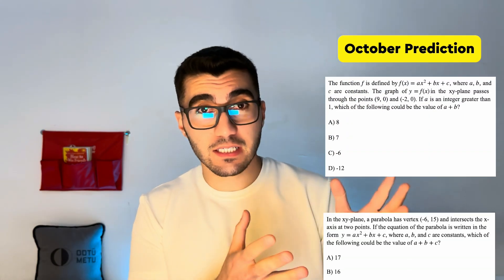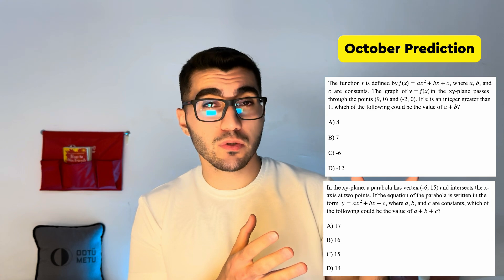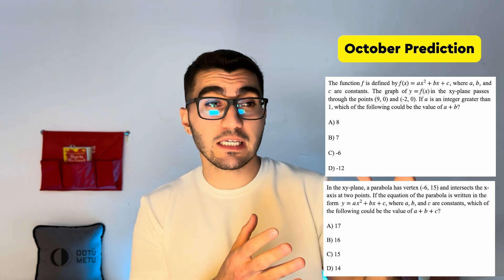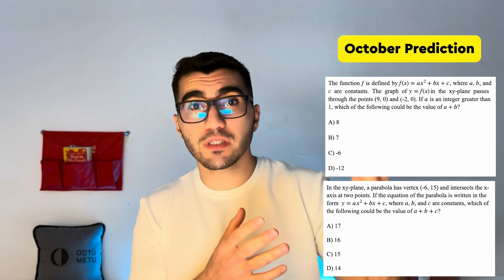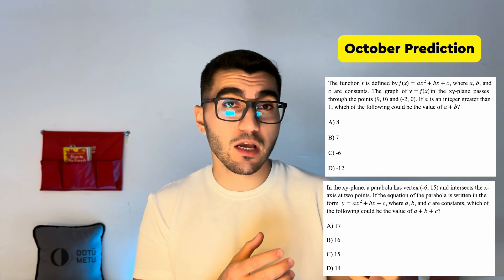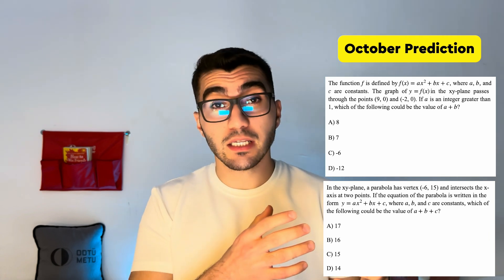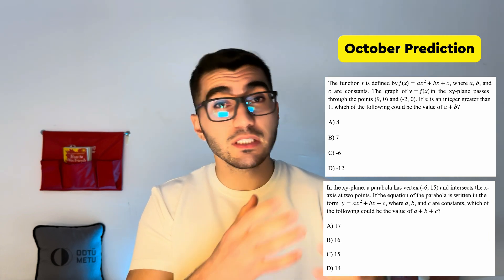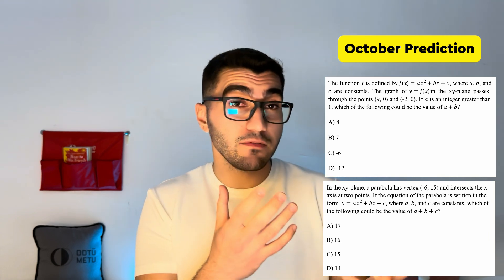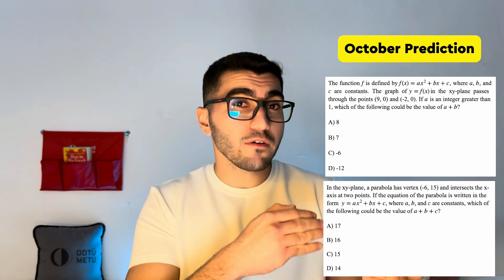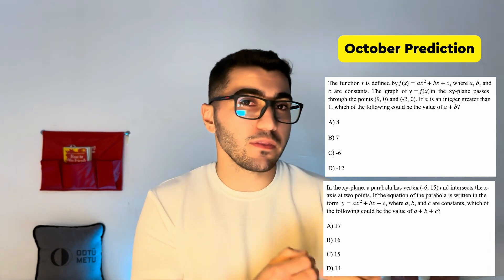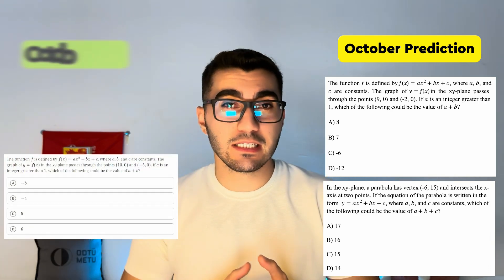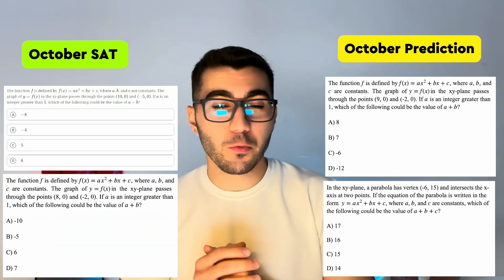The next two predicted questions covered quadratic equation forms. The first type gives you the x-intercepts and requires the x-intercept form of the quadratic equation. The second type gives you the vertex and requires the vertex form. Either one could be on the test. On the October SAT, the x-intercept form was on the exam. You can watch the video for the solutions.